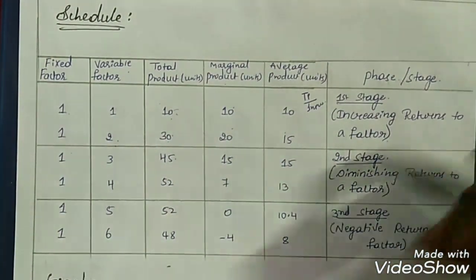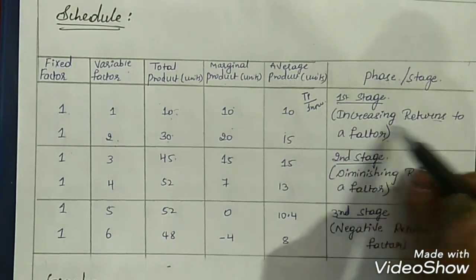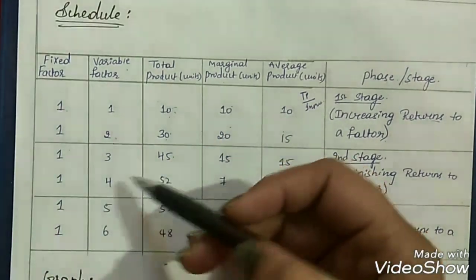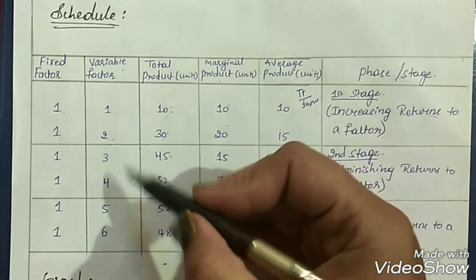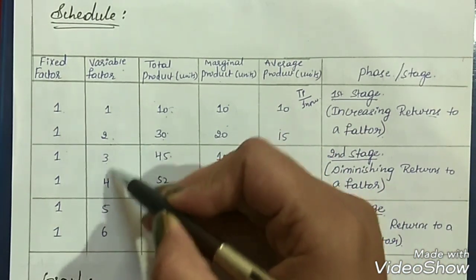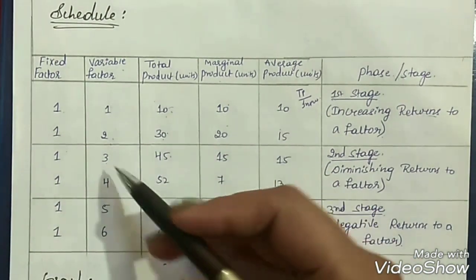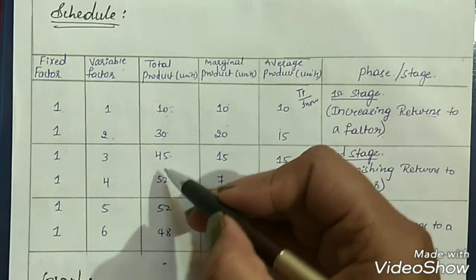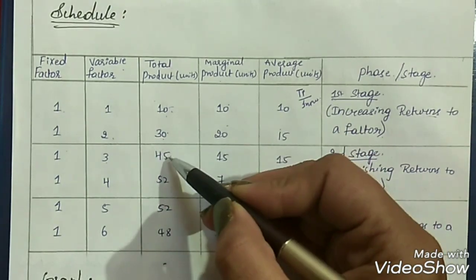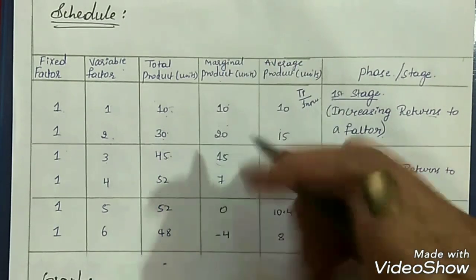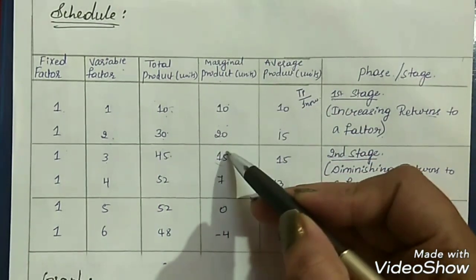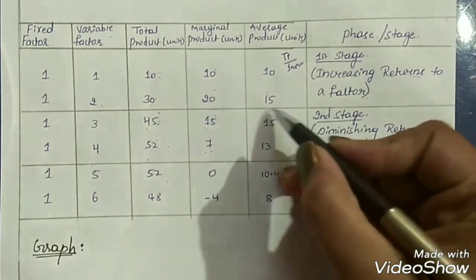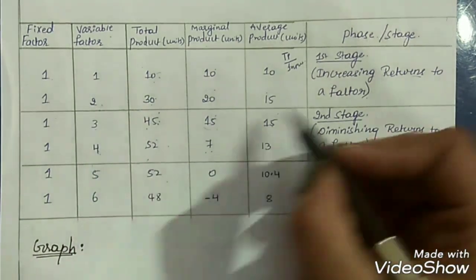In stage 1, our output is increasing at an increasing rate — we have increasing returns to a factor. When we increase labor from 2 to 3, the output increases from 30 to 45 bags. However, the difference is only 15, whereas earlier the difference was 20 — marginal product was higher before. So our output is increasing but at a diminishing rate. Average product is 45 divided by 3, which is 15.